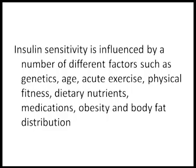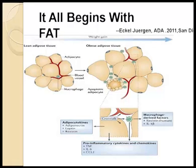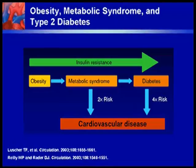It all begins with fat. As you can see here, comparing a lean person and an obese person, there is cross-talk because you have macrophages, adipocytokines, and pro-inflammatory cytokines. This is where the trouble begins, and this leads to insulin resistance. All the pathogenesis up to diabetes begins with obesity, giving rise to insulin resistance, then the metabolic syndrome, dyslipidemia, and so on. The starting point is somewhere there, as you can see.